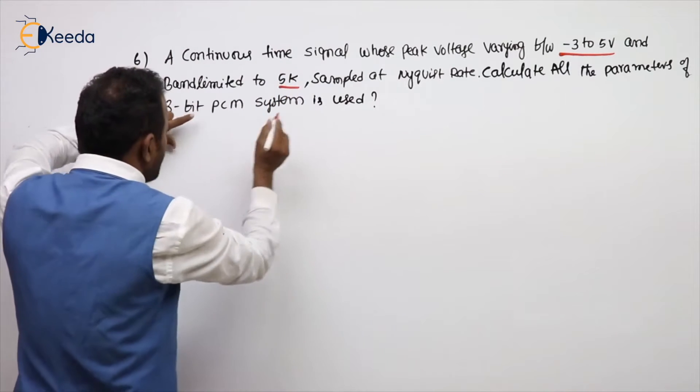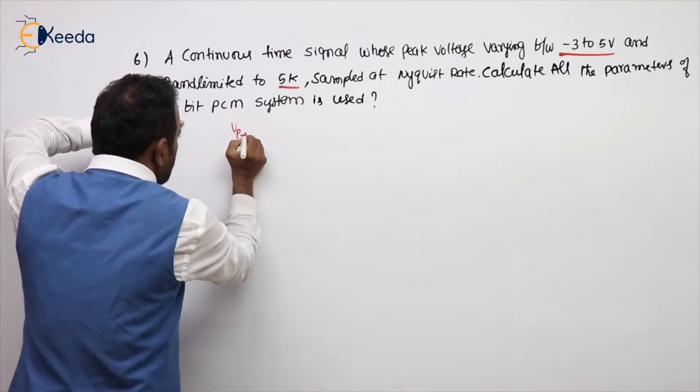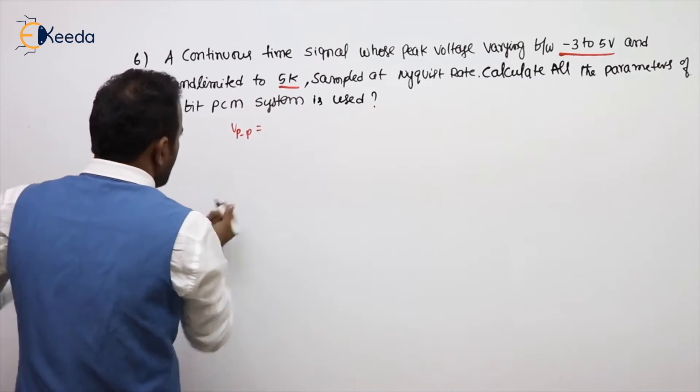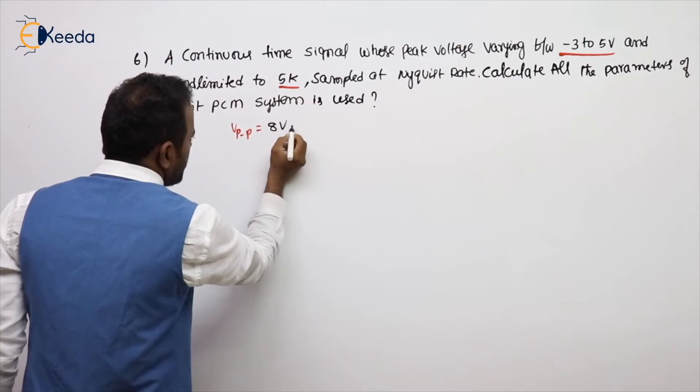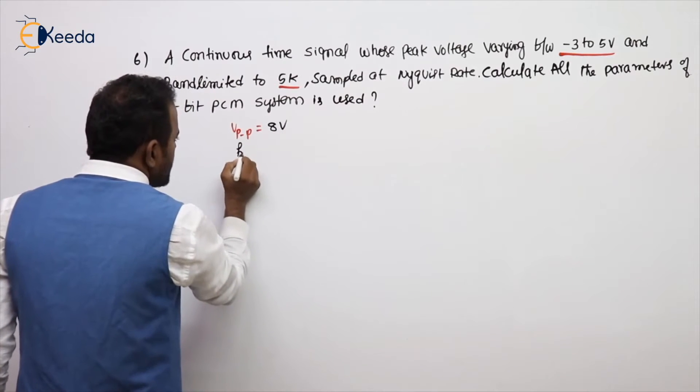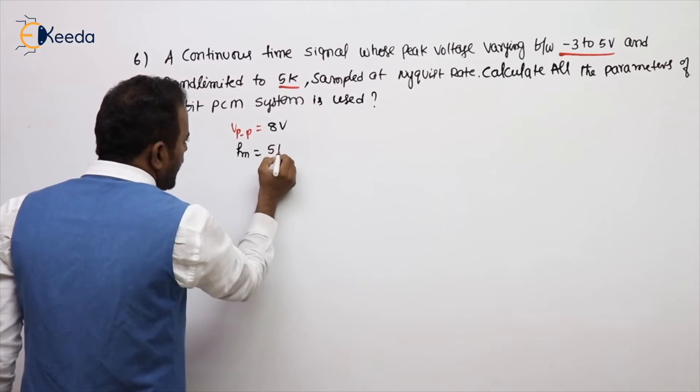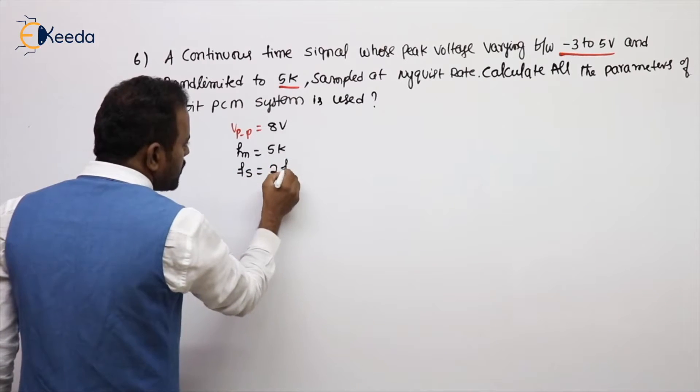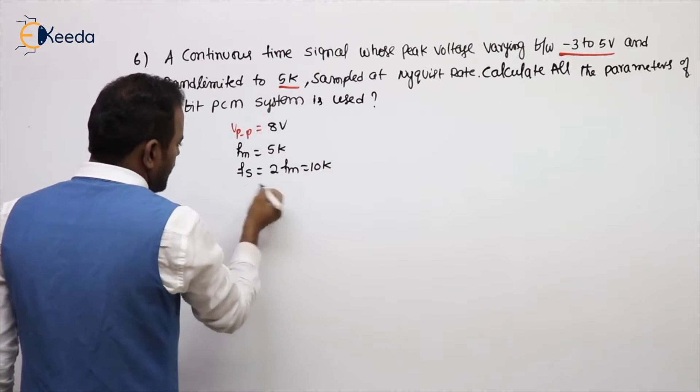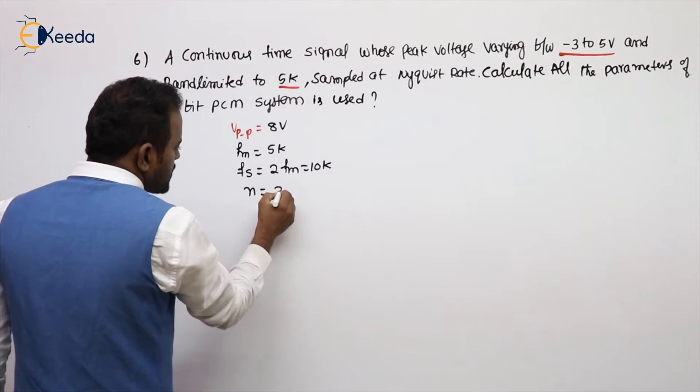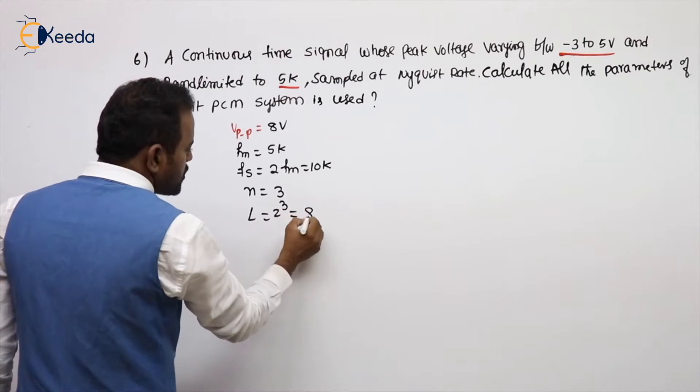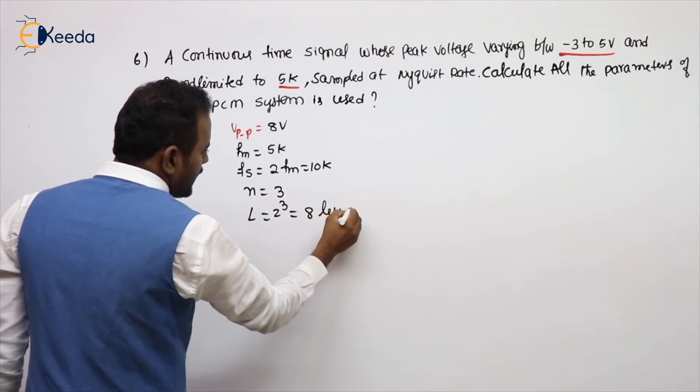Here the first point you need to understand what is its peak to peak value. -3 to 5 means I can say 8 volt. What is Fm is given 5K, then FS value itself is nothing but 2Fm because Nyquist rate, that is 10K. 3-bit PCM system means N is 3. So number of quantization levels is 2 to the 3, so 8 levels.